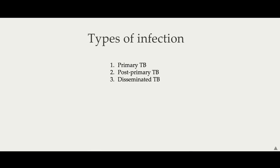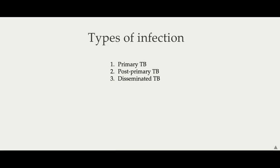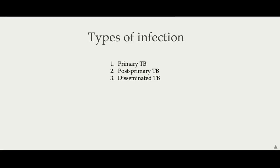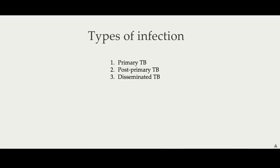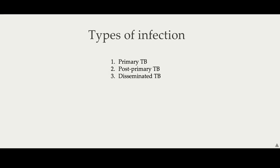Lastly, let's mention briefly disseminated TB. This occurs when there is unchecked proliferation and spread of the bacteria. One example of disseminated TB is miliary TB, which may be seen on a chest X-ray and resembles multiple millet seeds.